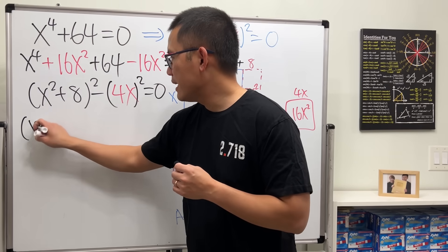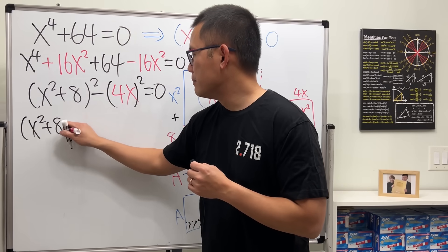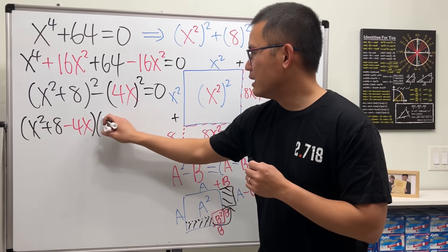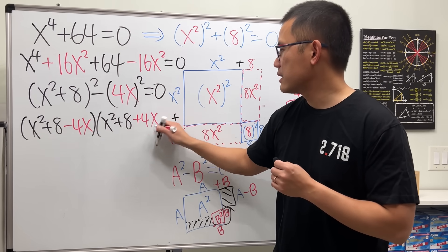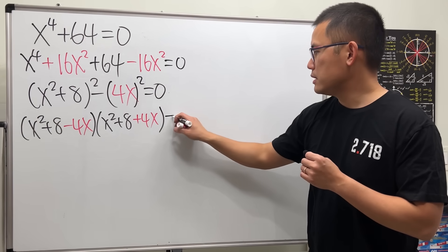So, we will just have x squared plus 8 minus 4x times x squared plus 8 plus 4x. And that's equal to 0.